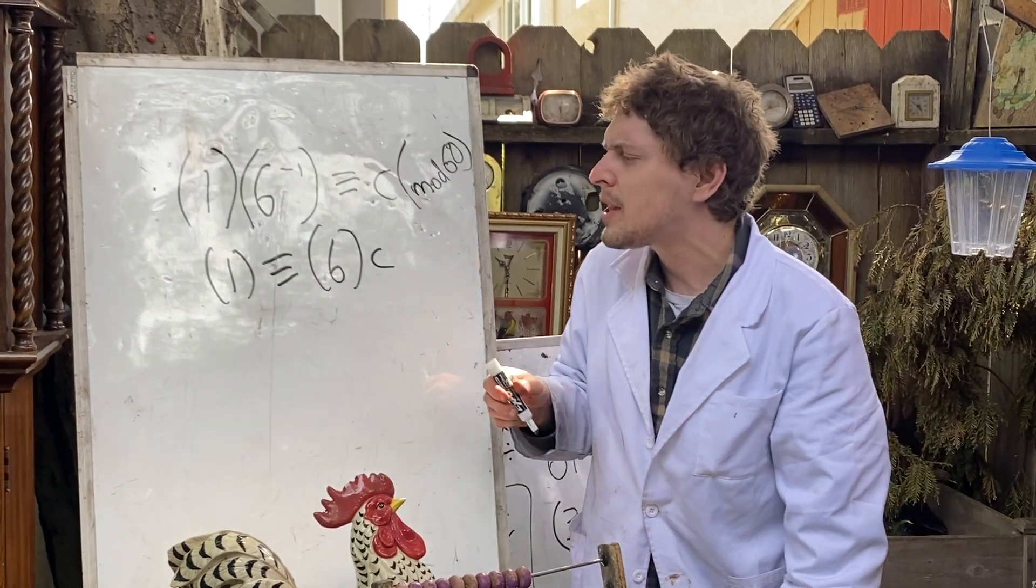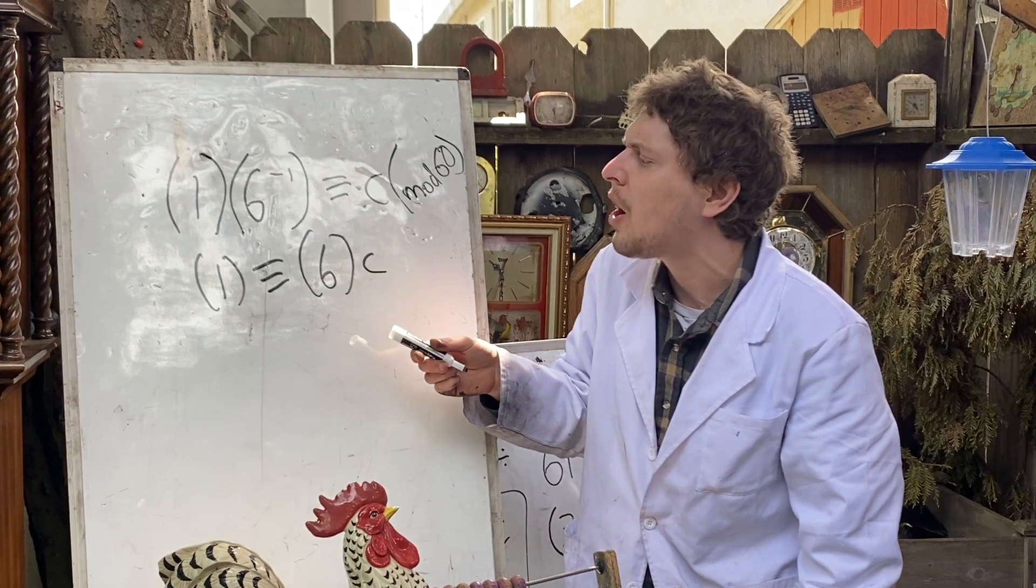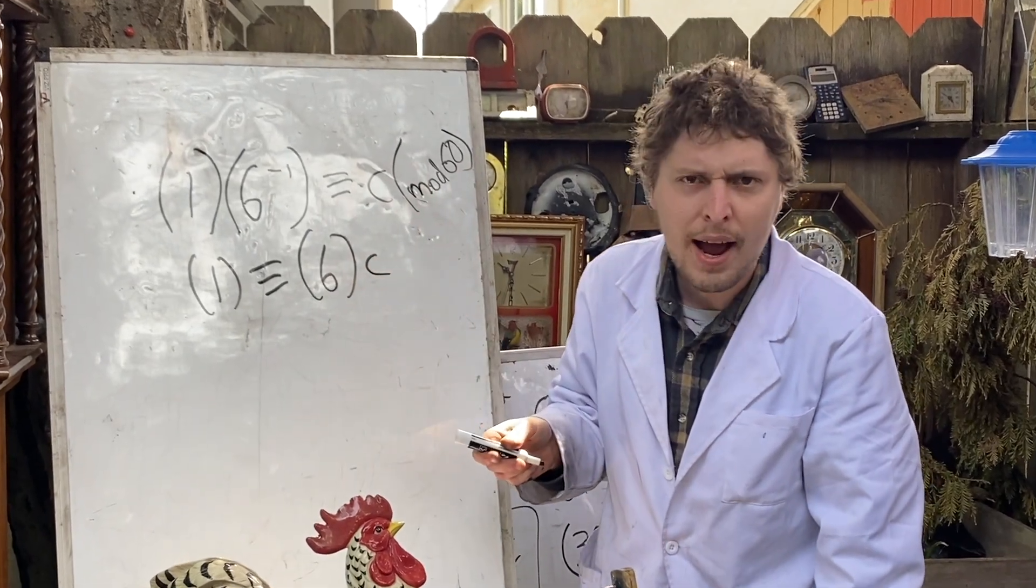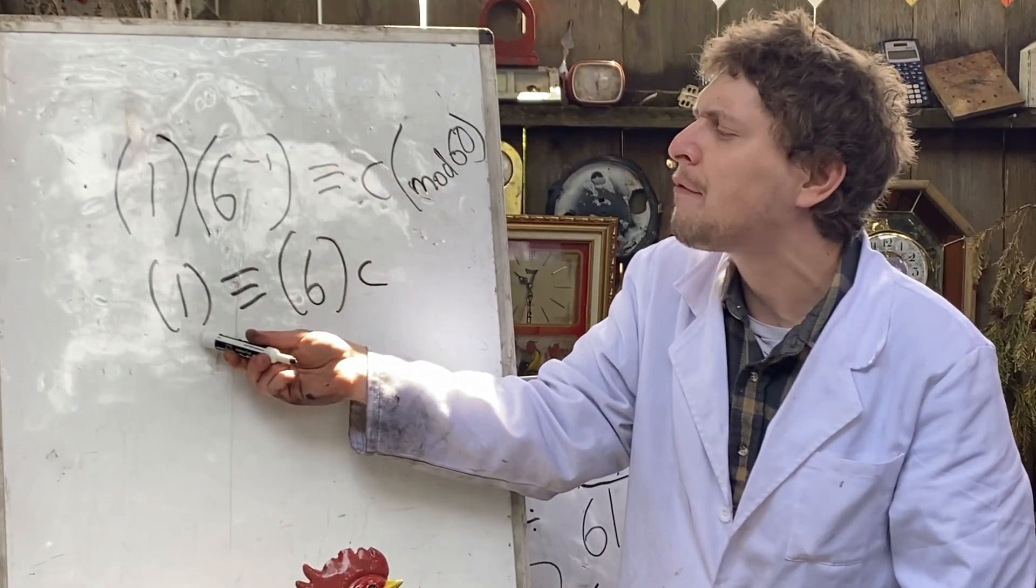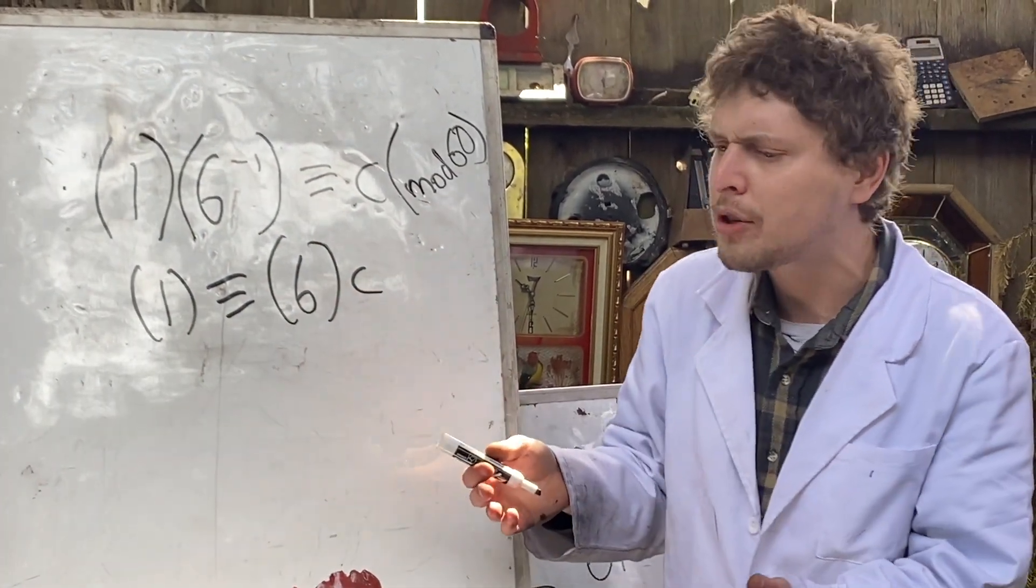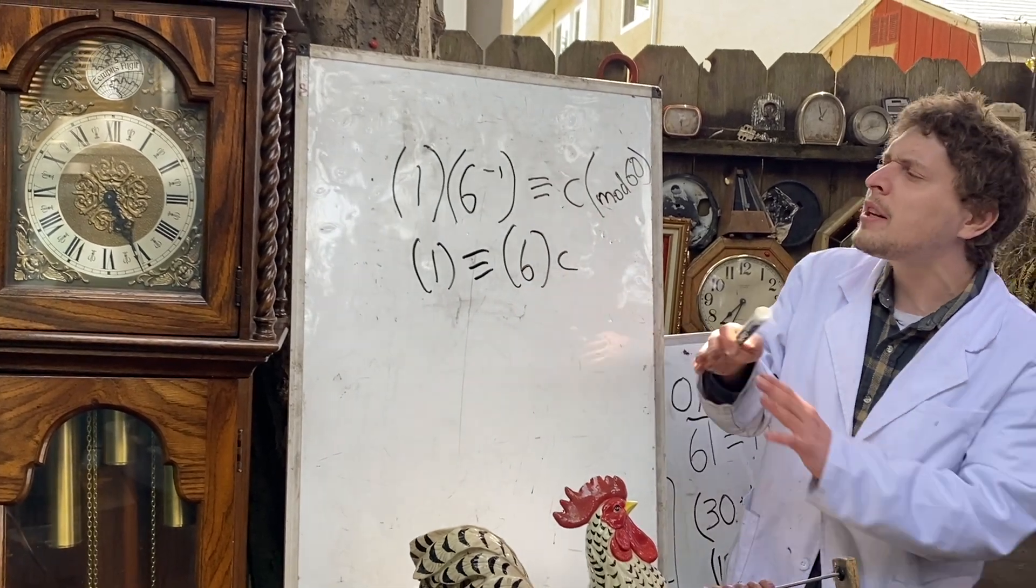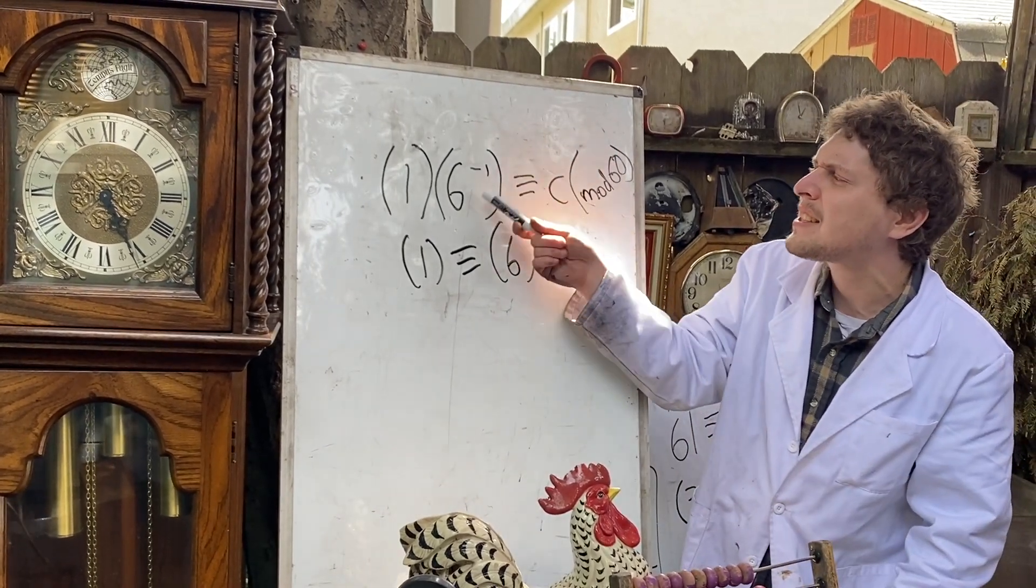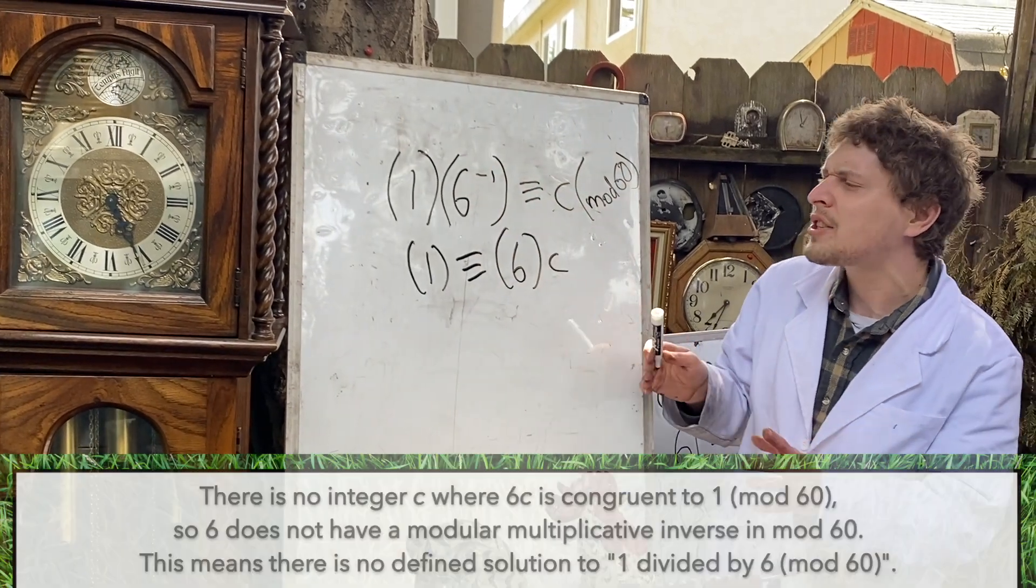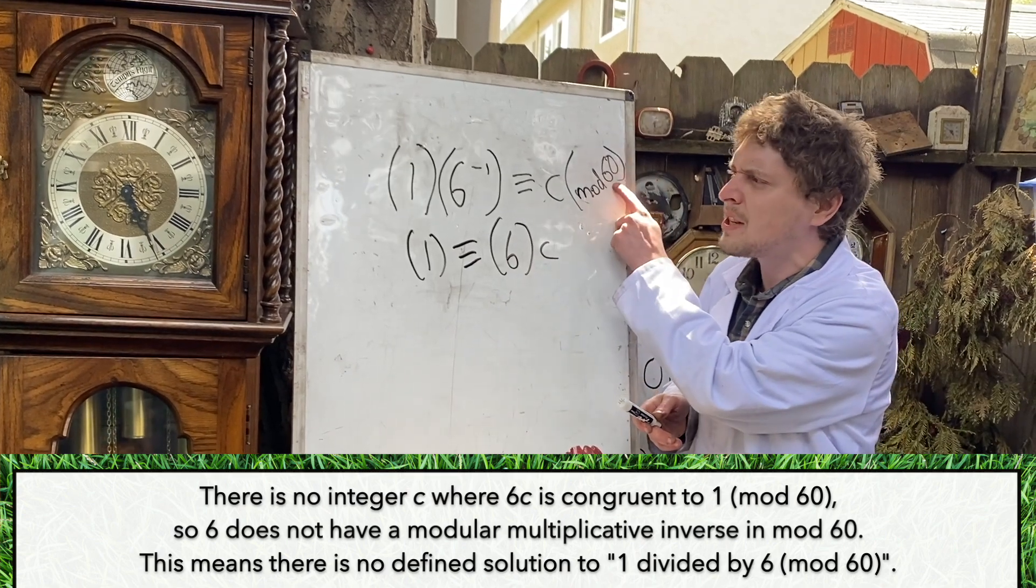That means that if I spin forward 6 minutes on a clock c amount of times, I'll end up having moved 1 minute total. And that's impossible. So this c can't exist, which we can describe as that 6 does not have a modular multiplicative inverse in mod 60.